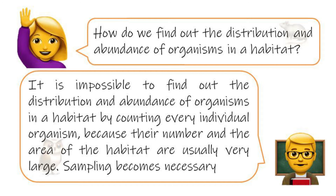How do we find the distribution and abundance of organisms in the habitat? It is impossible to find the distribution and abundance of organisms by counting every individual organism, because their number and the area of the habitat are usually very large. Sampling therefore becomes necessary.